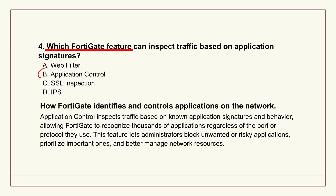The explanation clarifies that application control uses a huge database of signatures to identify specific apps, even if they're trying to be sneaky on weird ports. Things like social media, streaming, business apps - thousands of them. And then you can make policies based on the app itself, its risk, its behavior. Which is different from web filtering, which is more about URLs and website categories, or IPS, which is looking for malicious patterns and exploits. Application control gives you that granular visibility into the actual programs being used on your network.